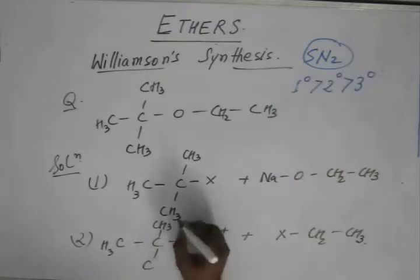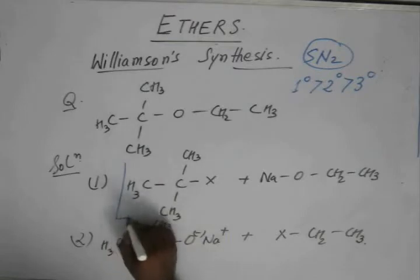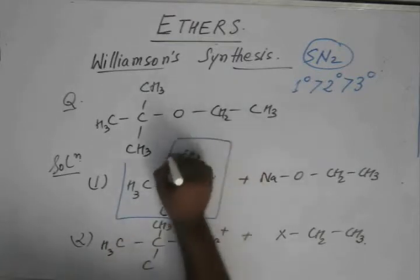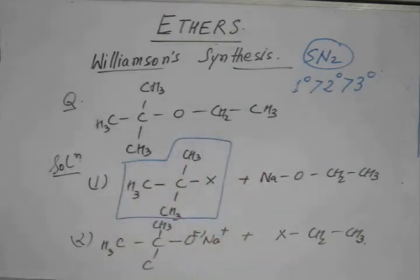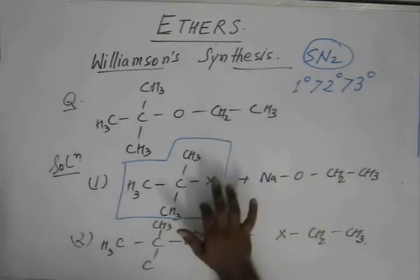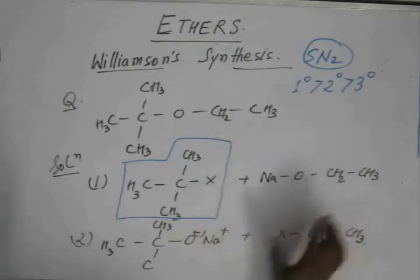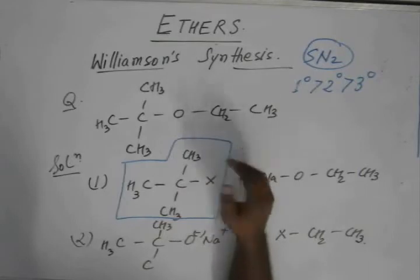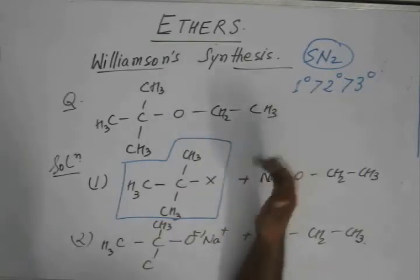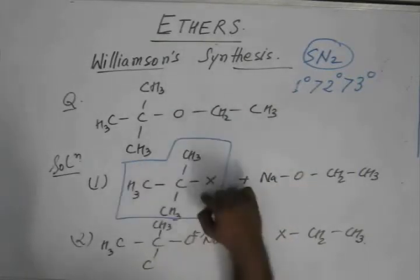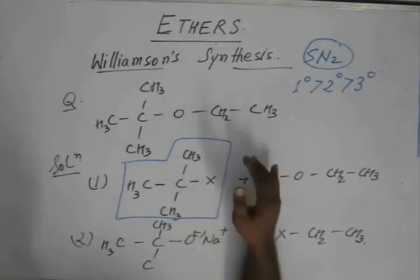In this case, if we take this as our starting product, which is the substrate, this won't favor a Williamson synthesis reaction. Why? Because this is a 3-degree substrate, it is a 3-degree alkyl halide. SN2 is not favored in case of 3-degree alkyl halides.